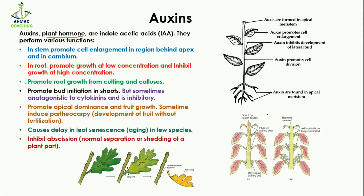Today we are going to study about auxins. Auxin is a plant hormone, which means this hormone is only found in plants. Its chemical nature is indole acetic acid.